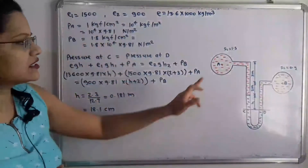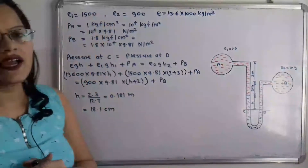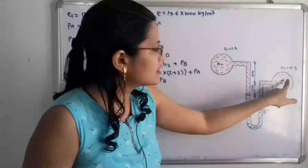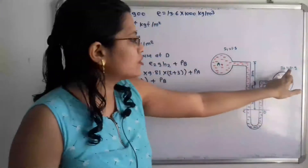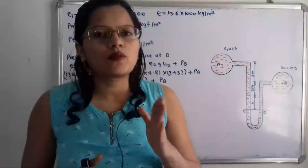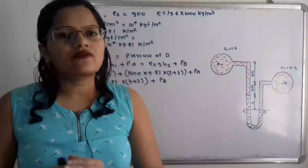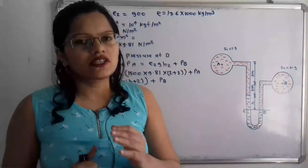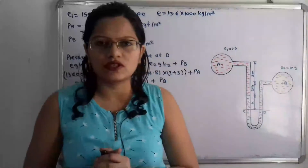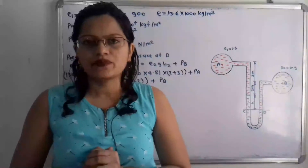From specific gravity we can calculate density: rho1 = S1 × 1000 = 1500 kg/m³. Similarly, S2 = 0.9, so rho2 = 0.9 × 1000 = 900 kg/m³. We also know the density of mercury, which is 13.6 × 1000 = 13600 kg/m³. We must know the density of mercury for this problem.